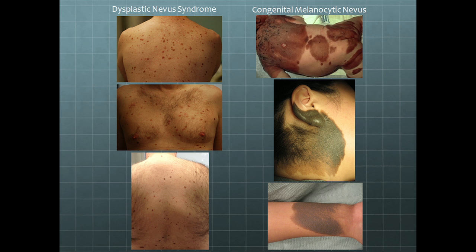I'm going to go into this in a little more depth. These are patients with what we would call typical classical dysplastic nevus syndrome, where clinically and histopathologically you would characterize them as dysplastic. Some clinicians refer to these as individuals with many nevi. Whether these are patients with dysplastic nevus syndrome or patients with many nevi, they definitely have a higher risk for developing melanoma.